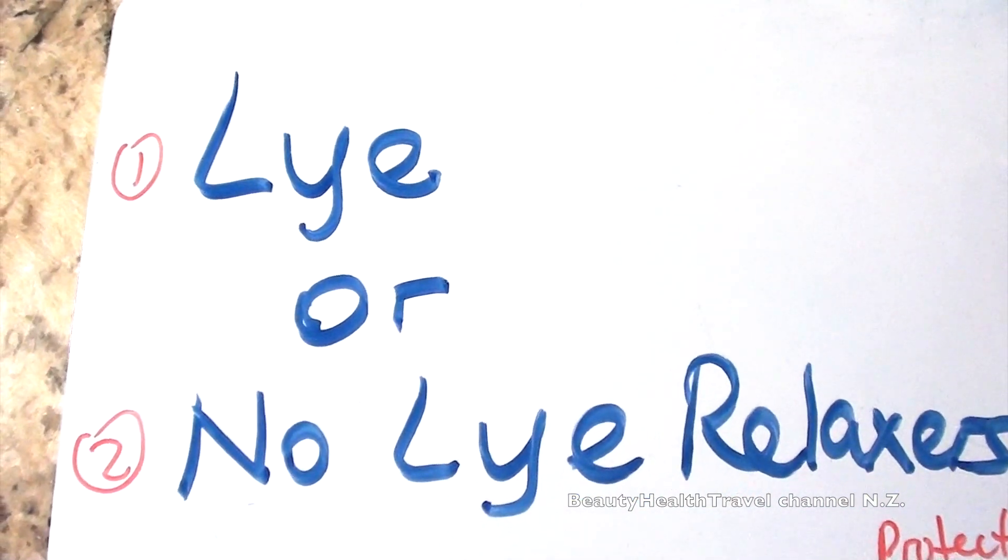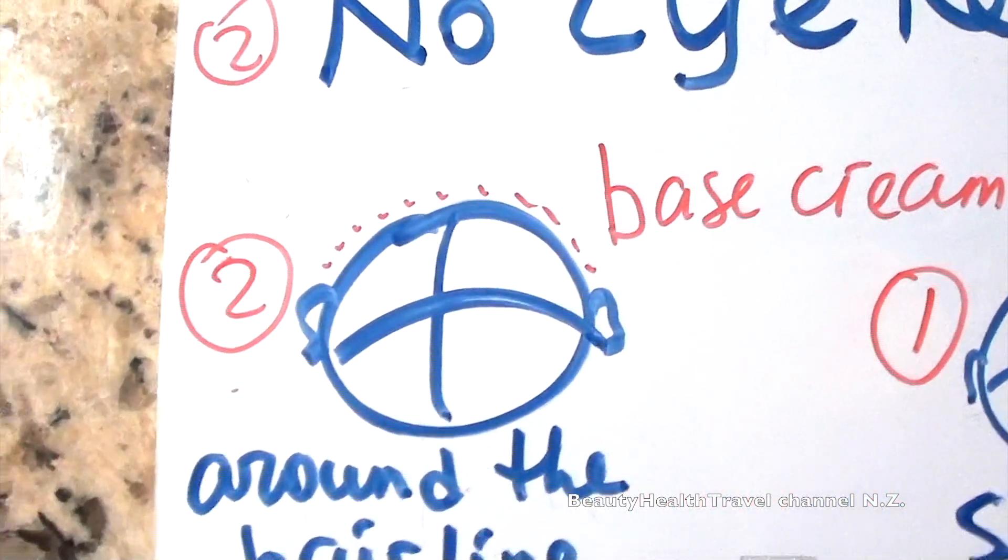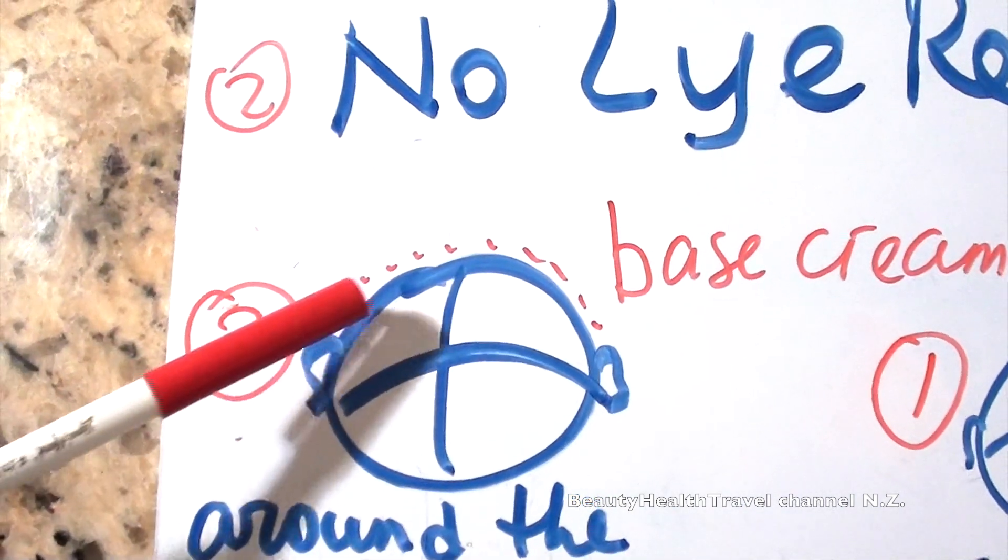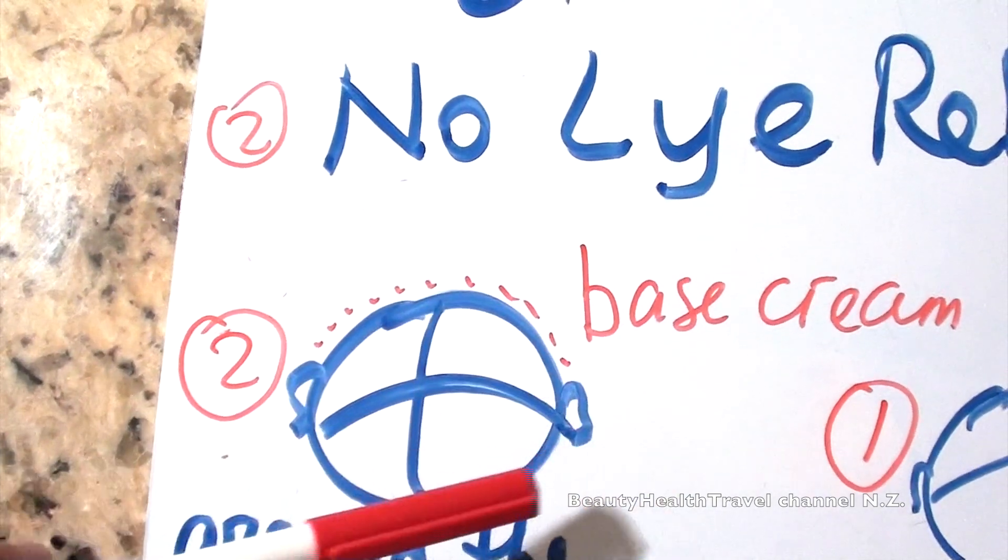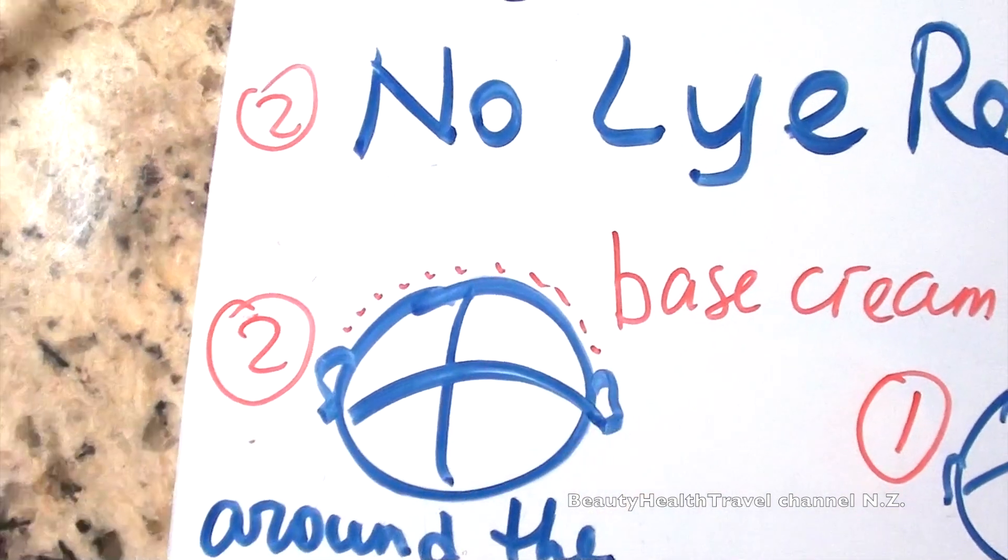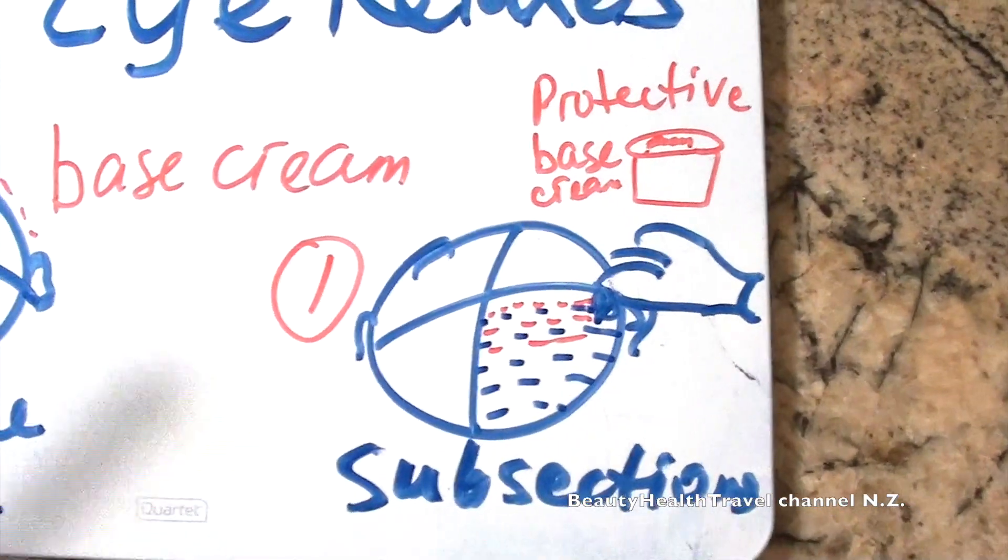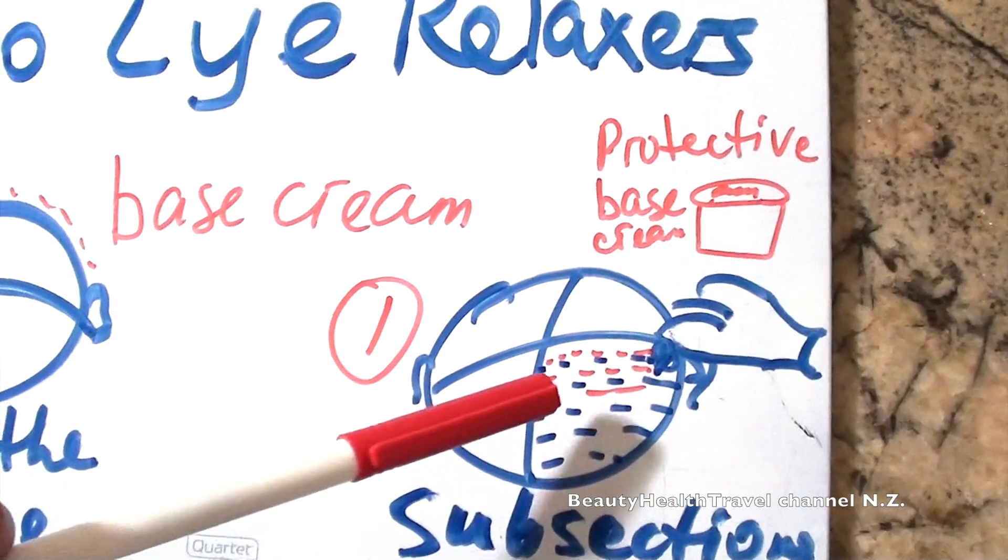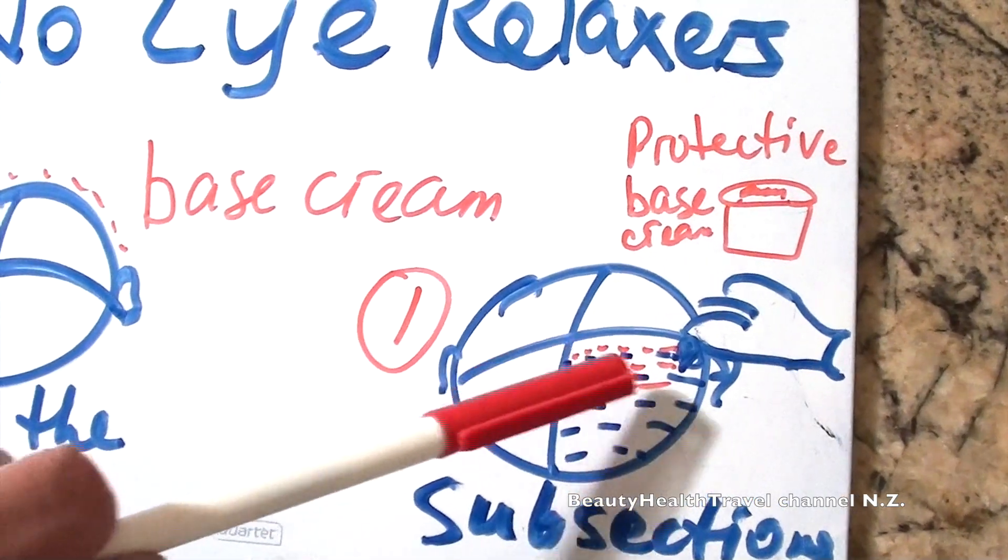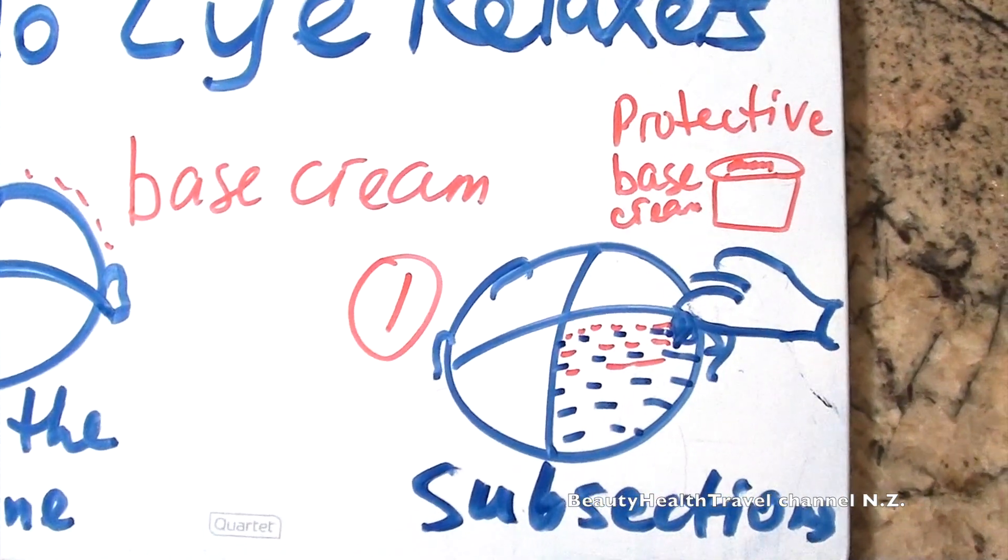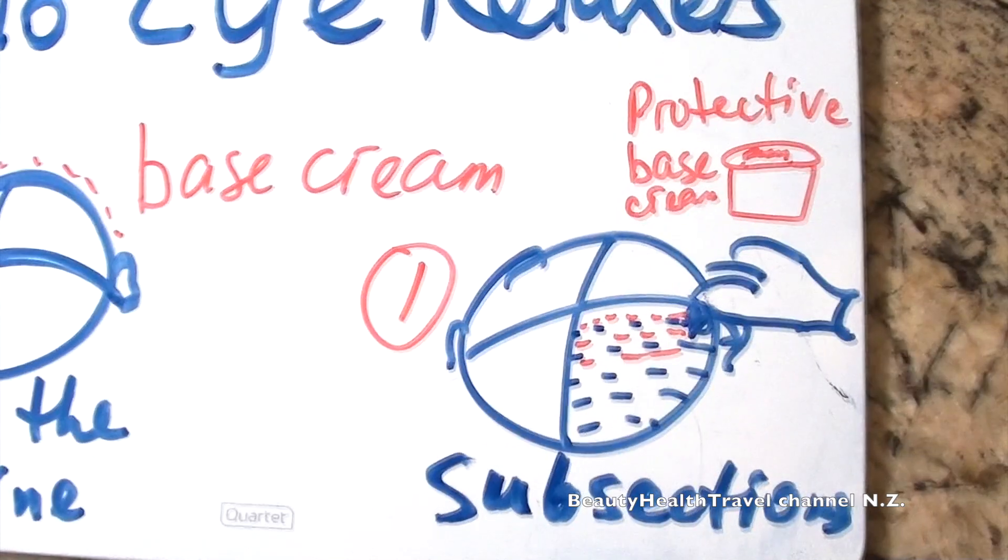Well, what are the differences between lye or no lye relaxers? A no lye relaxer is the one that you only base around the hairline because the product has the base cream inside. So you could do around the hairline, you could do over the ears. The lye relaxer is the one that you base around the hairline and around the subsections, all on the scalp. But you gently apply the base cream, which is protective base cream, to protect the client's scalp because it's a very strong relaxer and it might burn the client's skin.